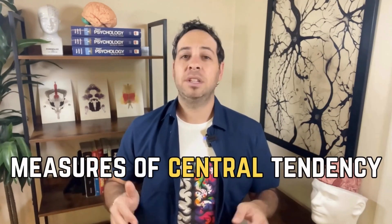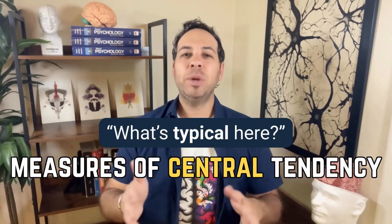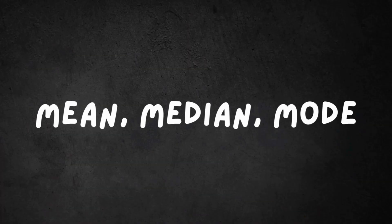Alright, so now we've got your data. What do we do with it? First up, measures of central tendency. That's a fancy stats term for asking, what's typical here? There are three ones you need to know: mean, median, and mode.